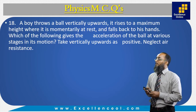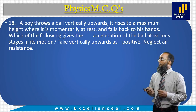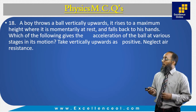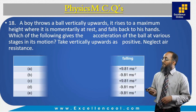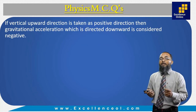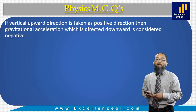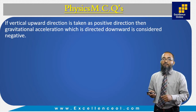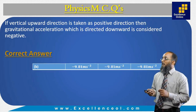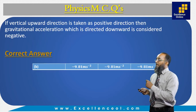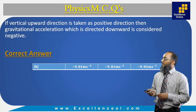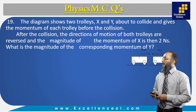The next question: a boy throws a ball vertically upwards; it rises to a maximum height where it is momentarily at rest and falls back. Which gives the acceleration at various stages? Taking vertically upward as positive, the downward direction is negative. Gravitational acceleration g always acts downward, so it is negative throughout. The correct answer is B: at all stages, acceleration is −9.81 m/s².